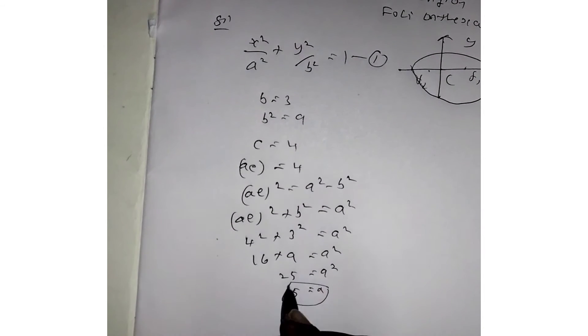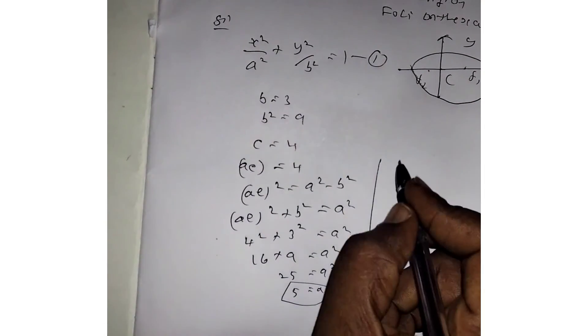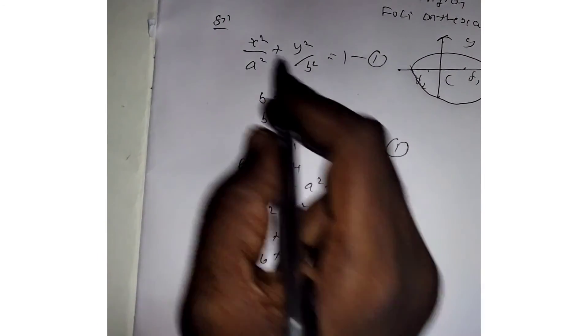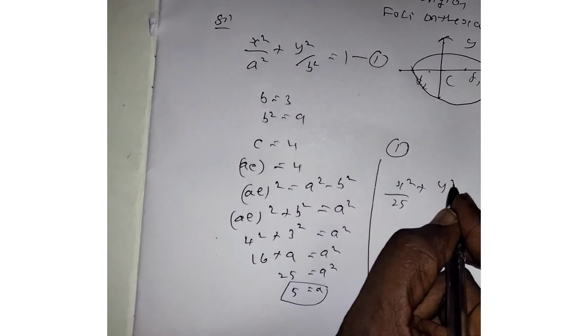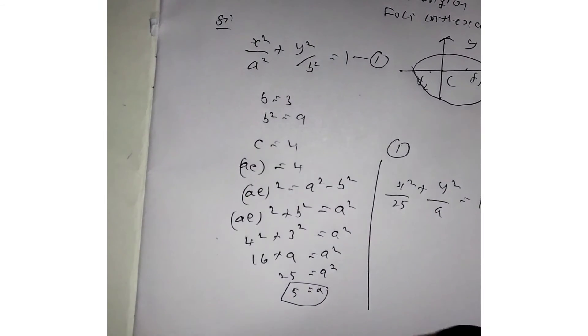Our aim is to find a², so substituting a² and b² into equation 1, we get x²/25 plus y²/9 equals 1. This is the required equation of the ellipse.